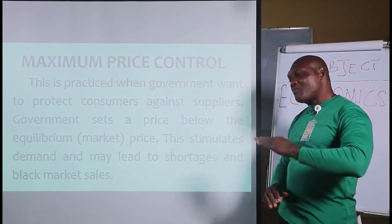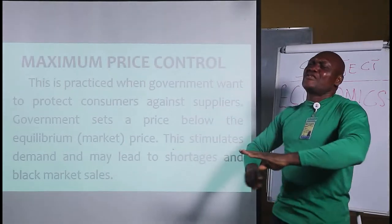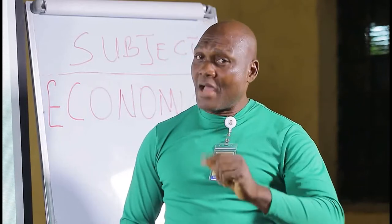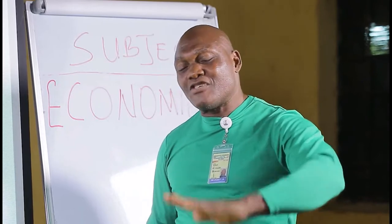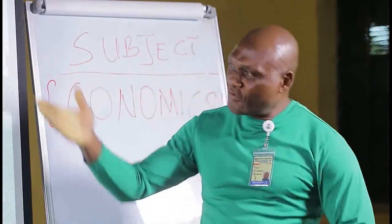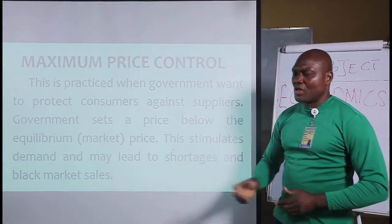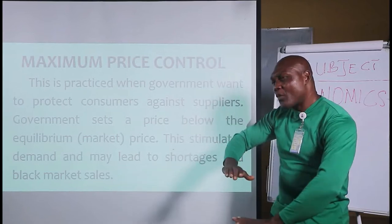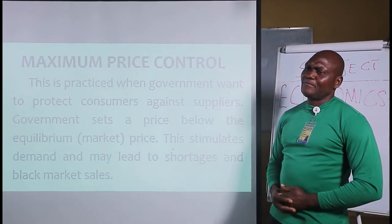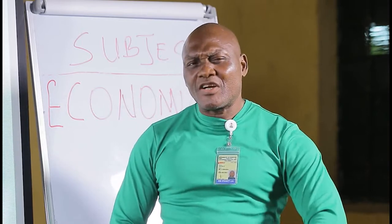Maximum price is the maximum price that producers can sell to consumers. Government says this is the highest price you can sell to consumers, but it is a low price — set below the equilibrium market price. When something is sold below market price, suppliers will not supply, because the law of supply says that suppliers supply more at a higher price than at a low price.